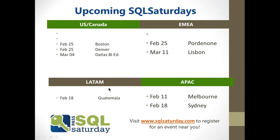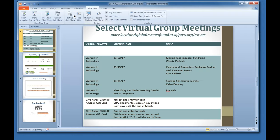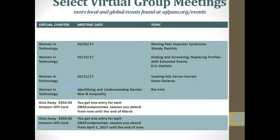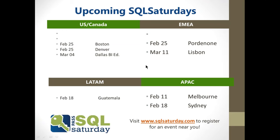Everybody that signs up for a session and attends — either in the U.S. or down under — you get one drawing entry per session that you attend. After three months, at the end of March, we'll be drawing for a $350 Amazon gift card. Then we'll start the same thing up again for three more months.